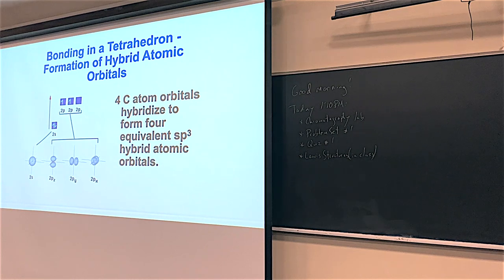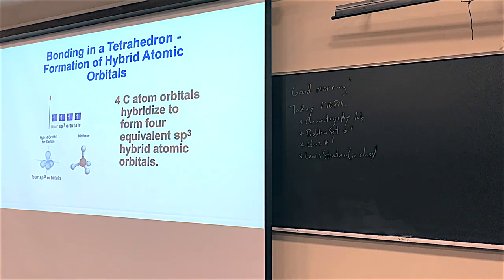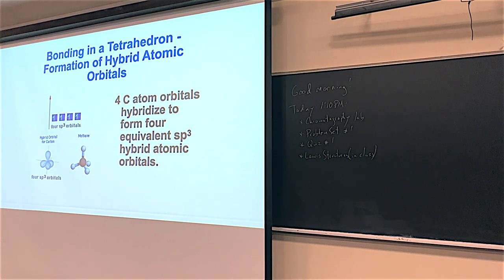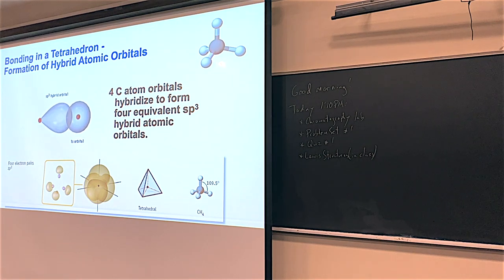The valence orbitals of carbon are the 2S orbital and the three 2P orbitals. When these atoms form methane, their orbitals are thought to hybridize to form four equivalent orbitals. Because each hybrid orbital for the carbon atom is composed of one part S orbital and three parts P orbital, they are called SP3 orbitals. The energies of the hybrid orbitals are the average of the original atomic orbitals. A methane molecule forms when four hydrogen atoms form sigma bonds to the SP3 hybrid orbitals of the carbon atom.